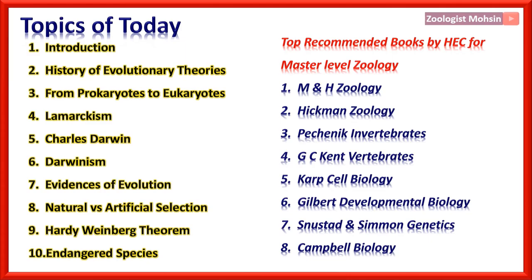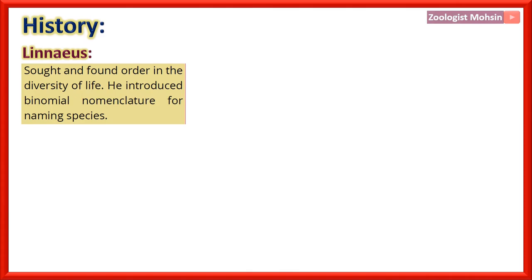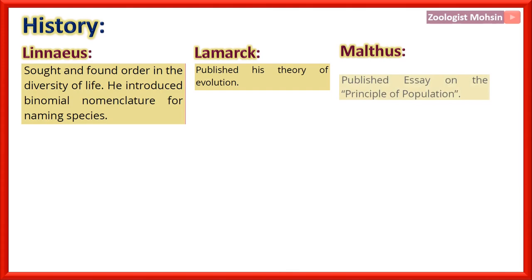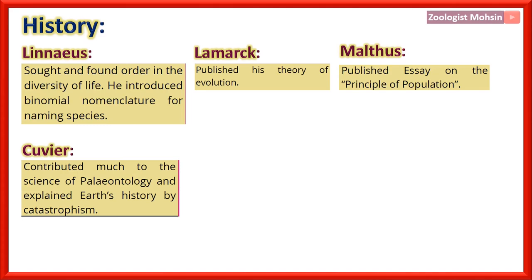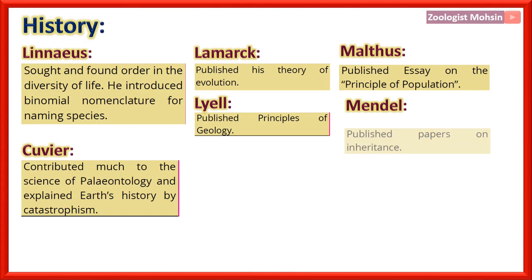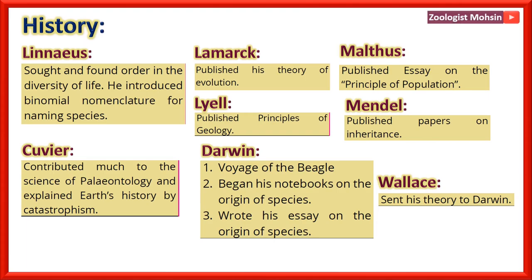History: Linnaeus sought and found order in diversity of life and introduced binomial nomenclature for naming species. Lamarck published his theory of evolution. Malthus published his essay on principle of population. Cuvier contributed to paleontology and explained earth's history by catastrophism. Lyell published principles of geology. Mendel published papers on inheritance. Darwin did a voyage of the Beagle, began his notes on origin of species, and wrote his essay on origin of species. Wallace sent his theory of natural selection to Darwin, which he published before Darwin.